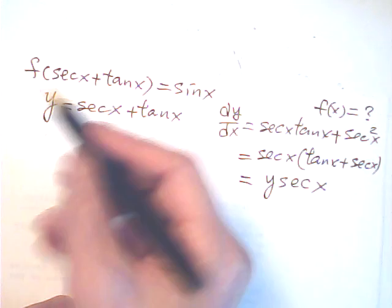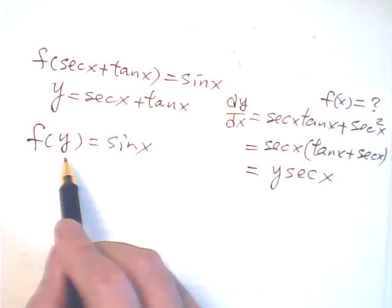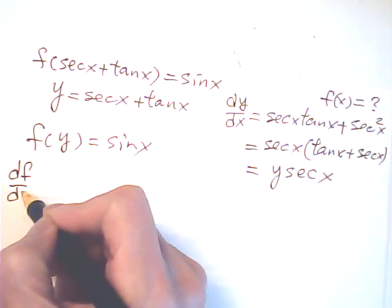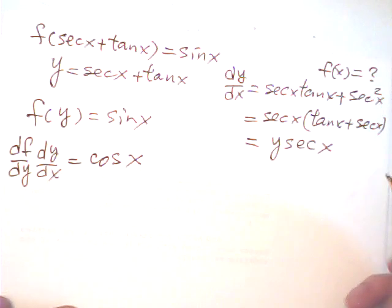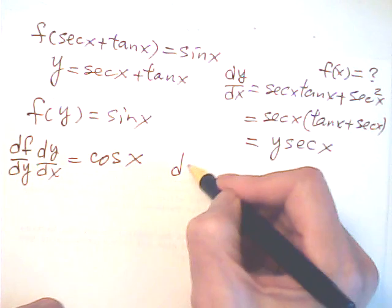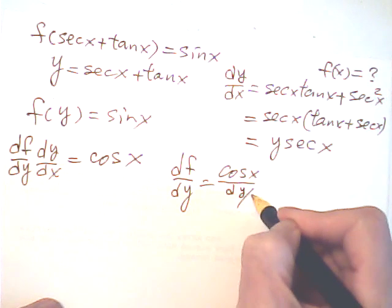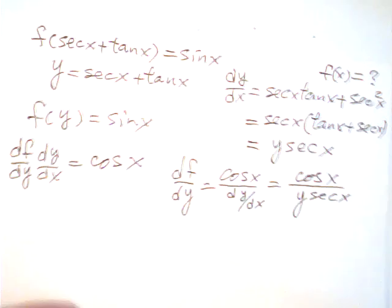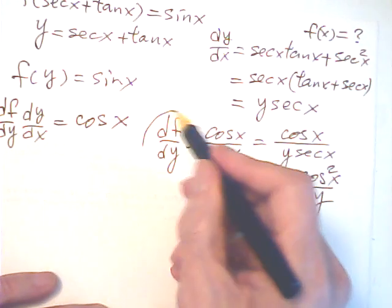Now my given equation is f(y) = sin x. If I differentiate both sides with respect to x, using the chain rule on the left: df/dy · dy/dx = cos x. So df/dy = cos x over dy/dx, which equals cos x over (y·sec x), which equals cos²x over y.